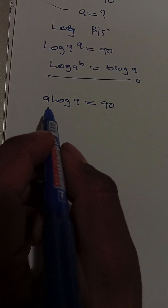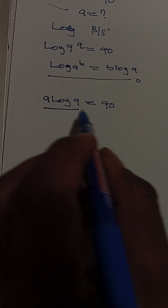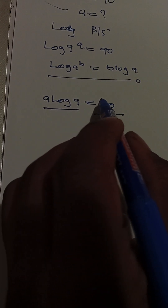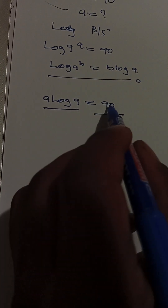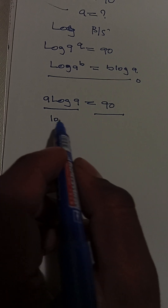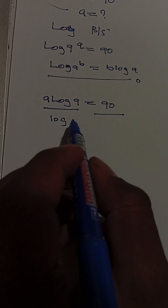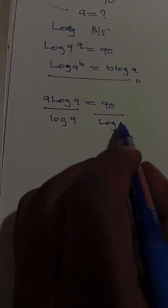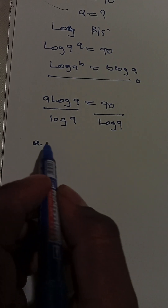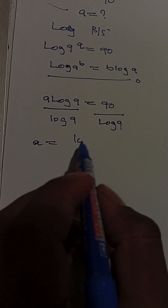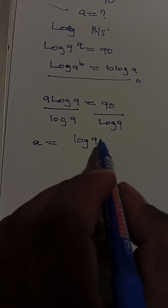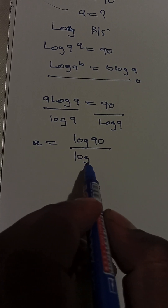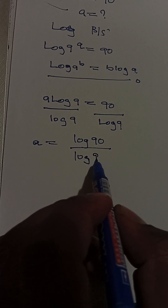Now to solve for a, we divide both sides by log(9). So a is equal to log(90) divided by log(9).